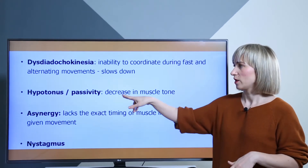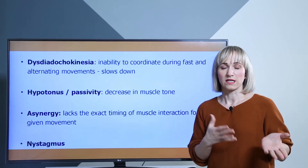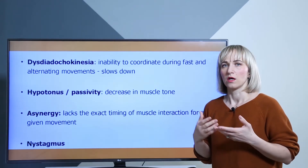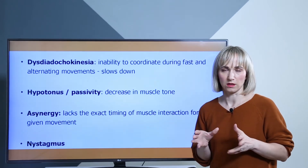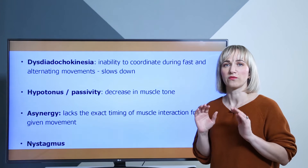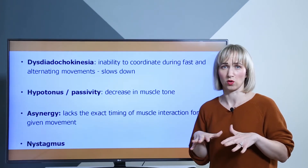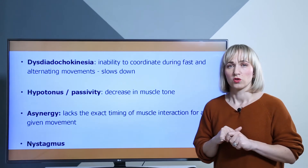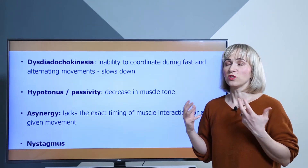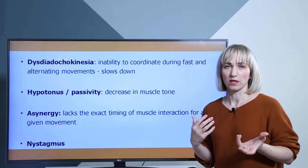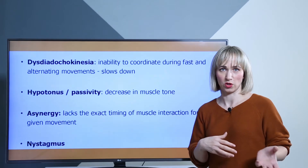We also observe hypotonus and passivity. Unlike other central nervous system pathologies, in cerebellar pathologies we do not have spasticity or rigidity. Instead, the patient shows passivity and hypotonus of the muscles. We can test this by changing the patient's position and observing that the patient is unable to correct his position.